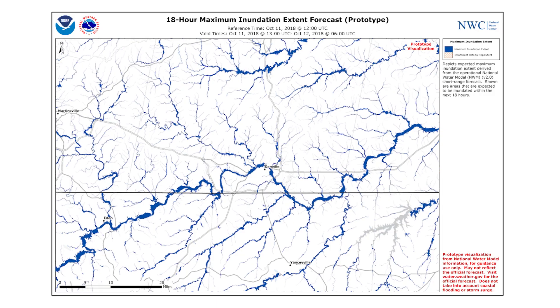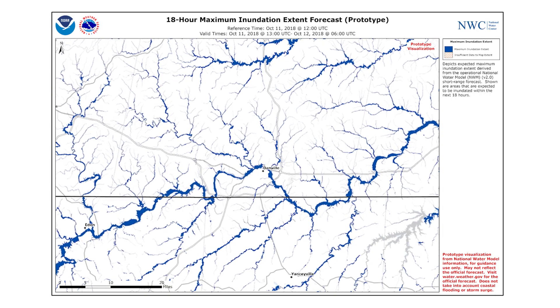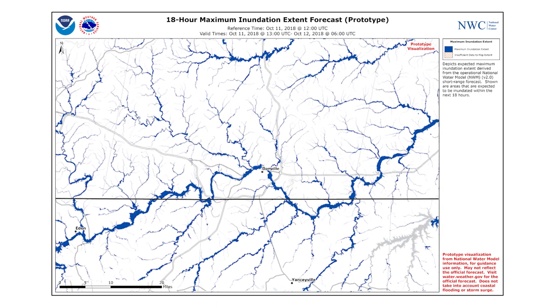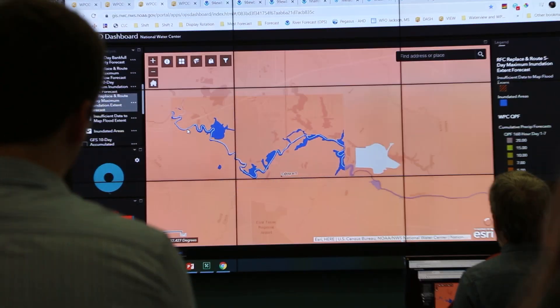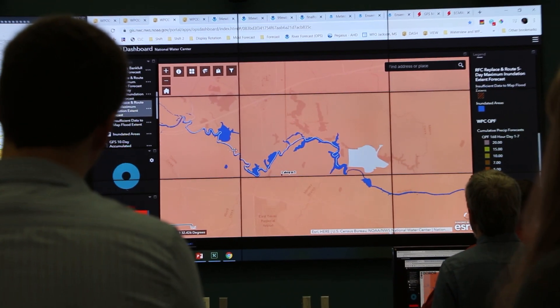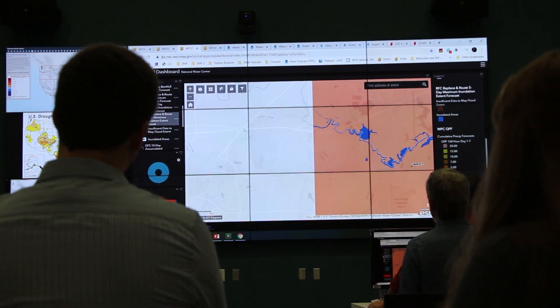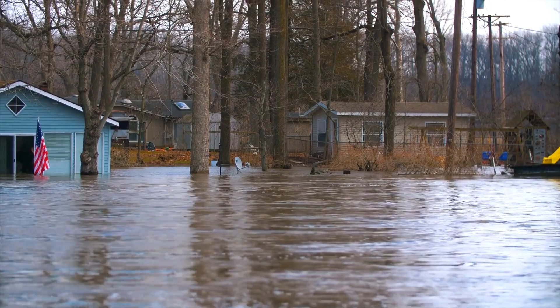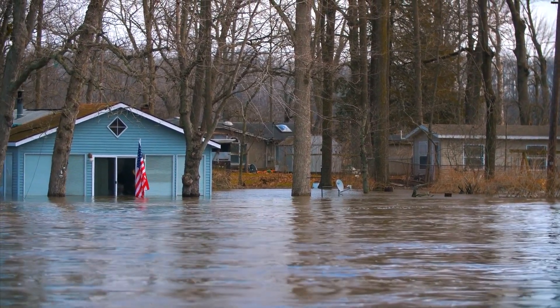Information about potential inundation associated with high flows provides vital decision support. With this information, our partners and forecast users can make decisions about road closures, evacuations, sandbagging, and assistance to vulnerable populations.